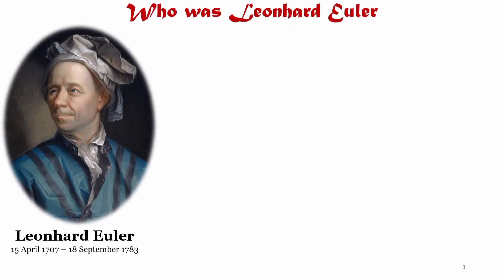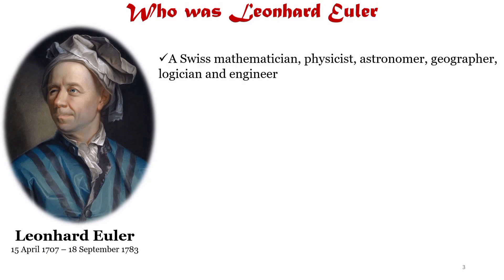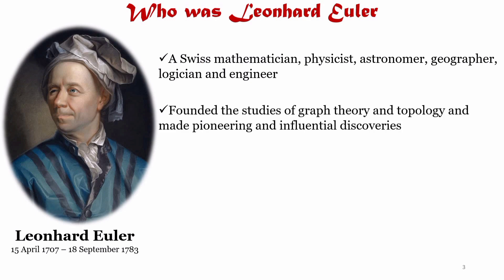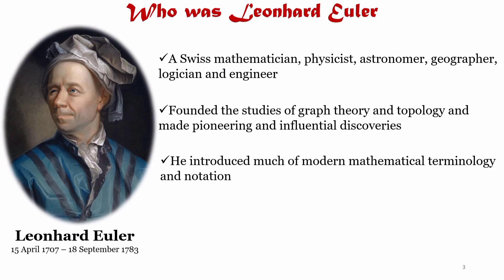Who was Leonard Euler? Leonard Euler was a Swiss mathematician, physicist, astronomer, geographer, logician and an engineer who founded the studies of graph theory and topology, and made many pioneering and influential discoveries in many other branches of mathematics such as analytic number theory, complex analysis and infinitesimal calculus. He introduced much of the modern mathematical terminology and notation including the notion of mathematical function. He is also known for his work in mechanics, fluid dynamics, optics, astronomy and music theory.